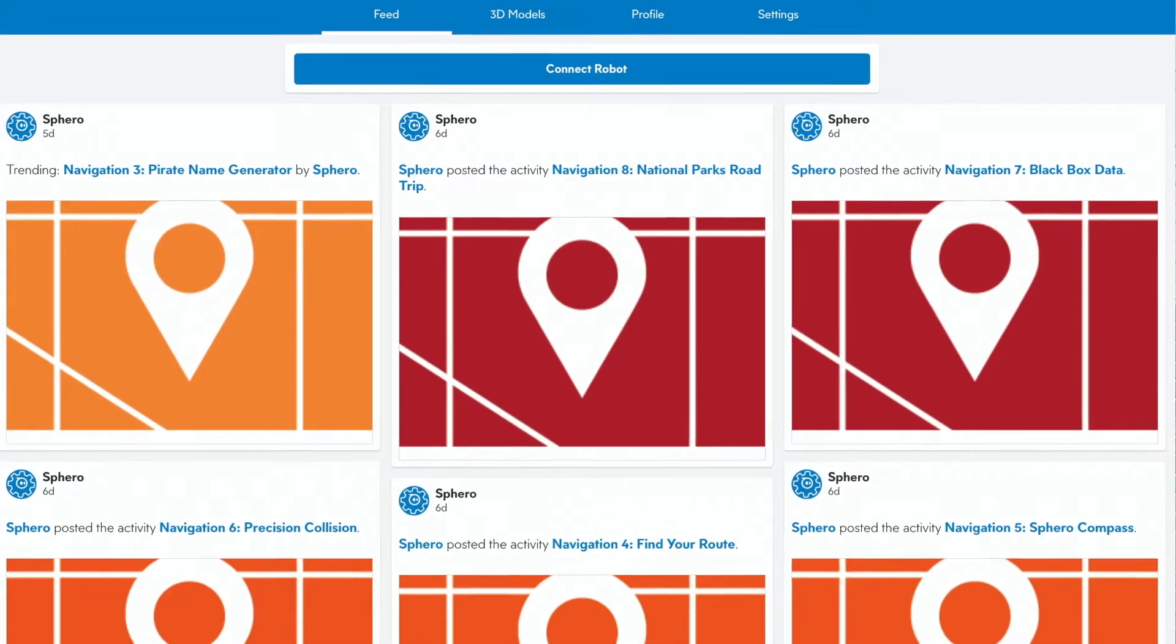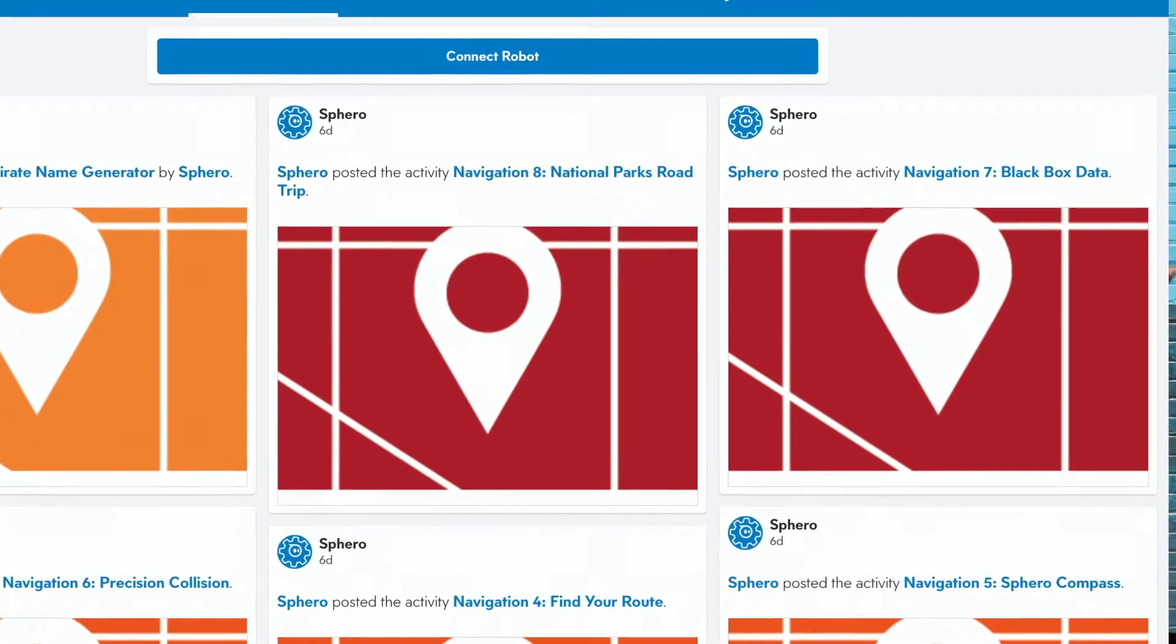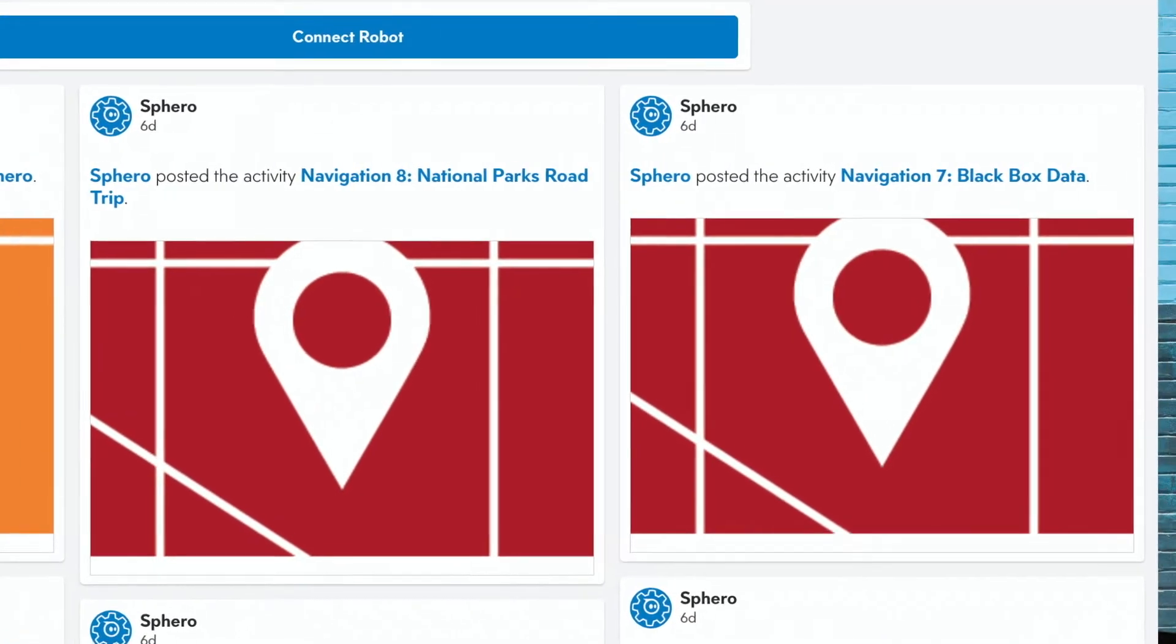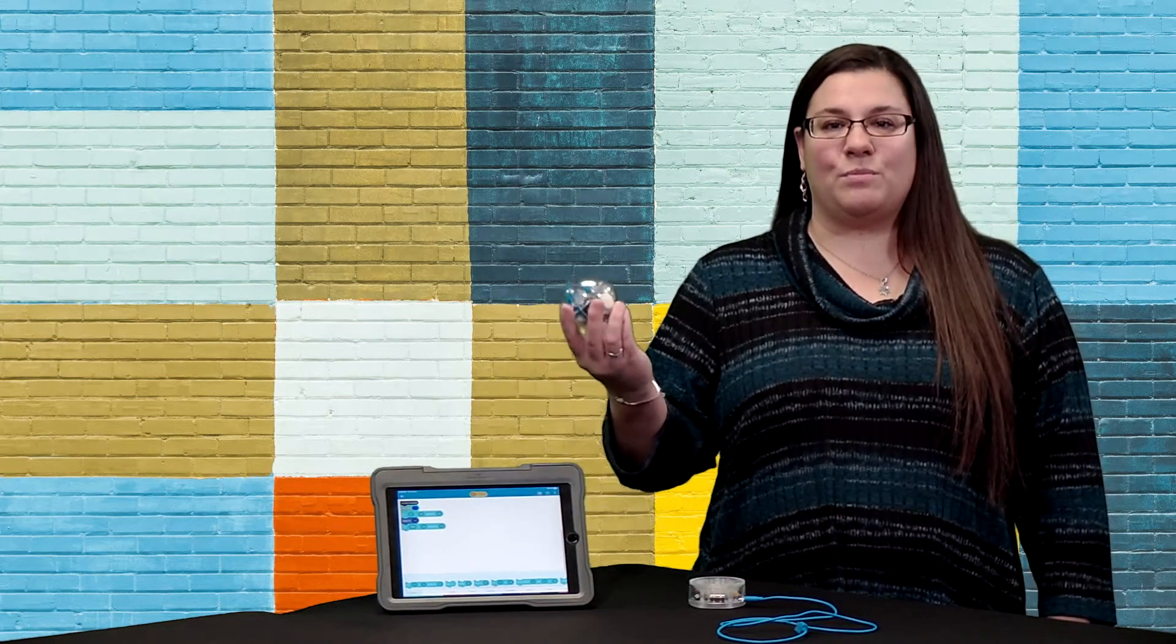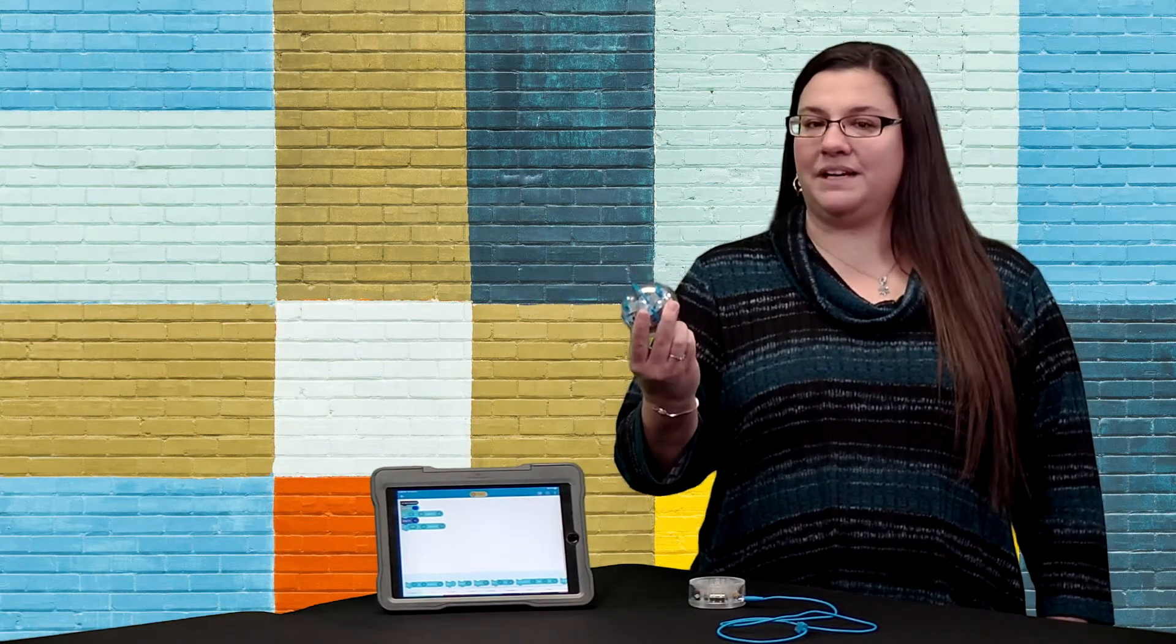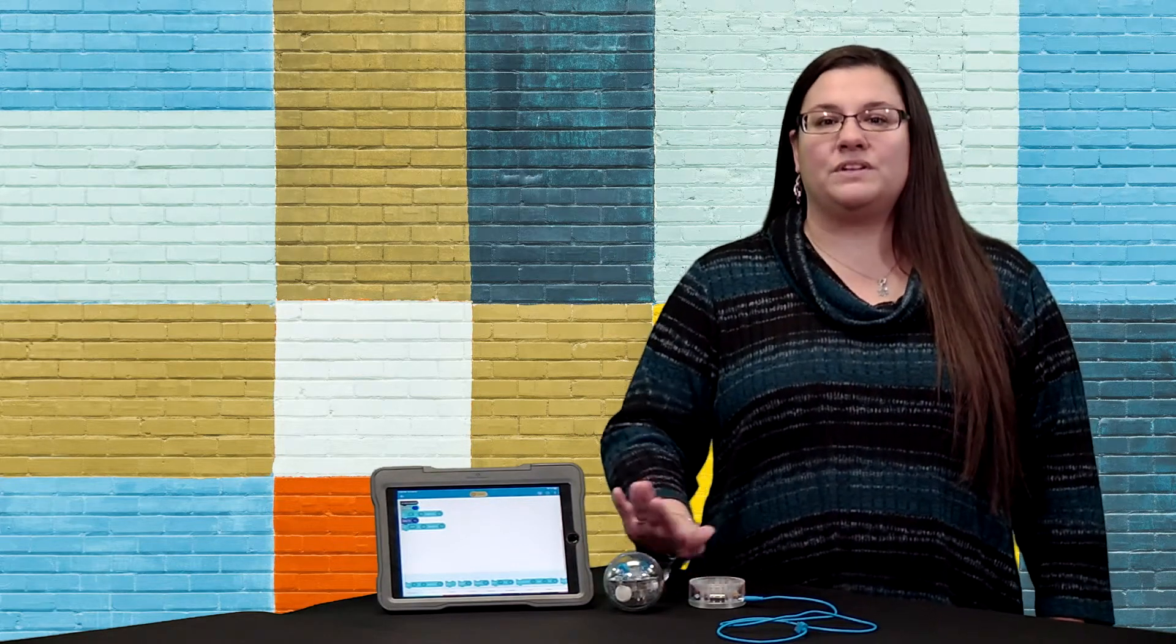Teachers can also choose from an extensive library of activities and assign them to students within the app. When connecting Sphero to your device via Bluetooth, the robot is detected based on proximity. Therefore, if you're using a class set of Spheros, the one closest to your device will have the strongest signal.